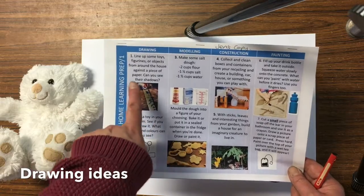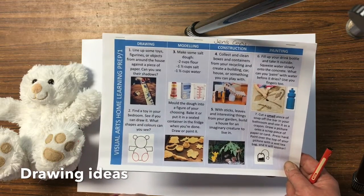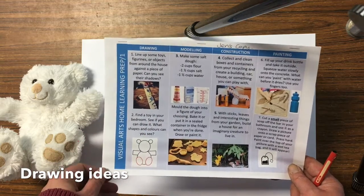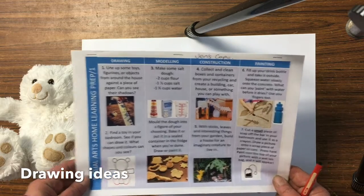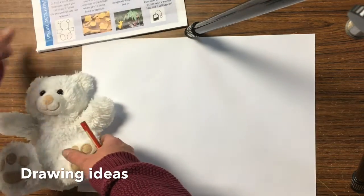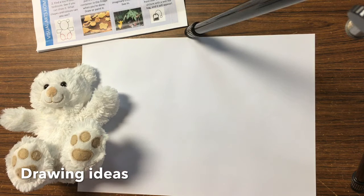We haven't got enough sun for me to line up some things and draw their shadows, so I thought I would find a toy, and it just happens that I have this one at school. The activity is: find a toy and see if you can draw it.